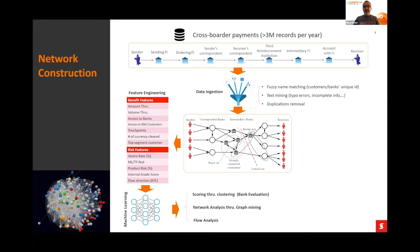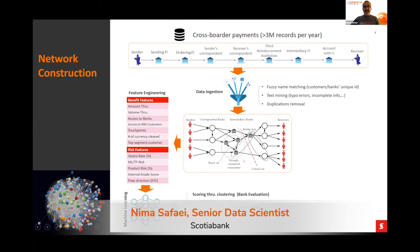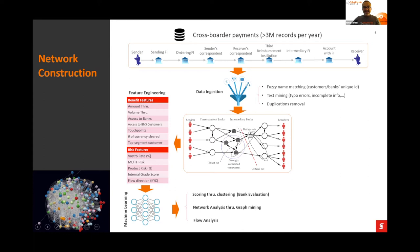We created a network from the data of the corresponding payments. The network included senders, correspondent banks, intermediary banks, correspondent, and receivers. This is the key component and main structure of the network. Using the network, we did some feature engineering — extracting network-based features that before this project nobody had any idea about.